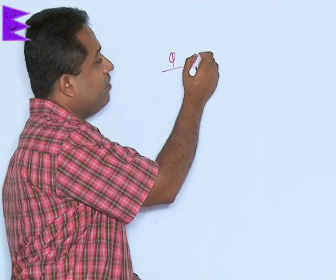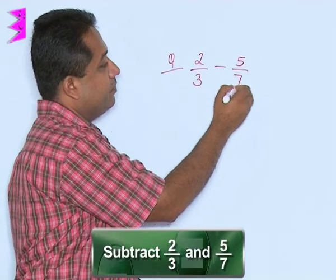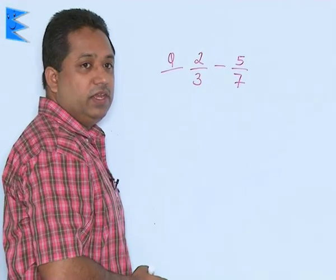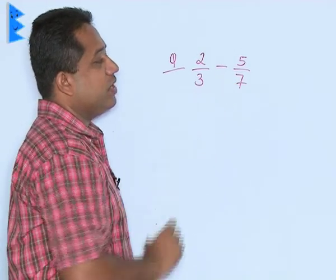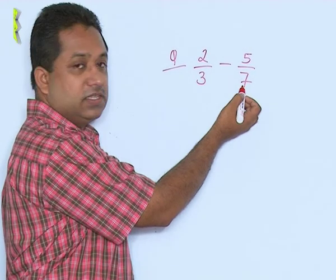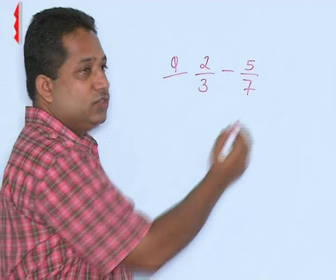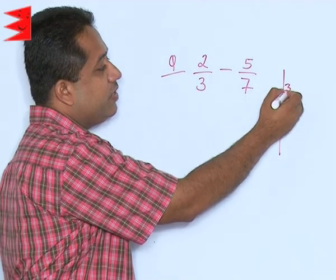Let us say we want to subtract 2 by 3 and 5 by 7. There is a subtraction sign in between and we want to subtract these two rational numbers. Subtraction is only possible directly if the denominators are same. At the moment, we find that the denominators are different. So, we are going to take the LCM of the denominator.